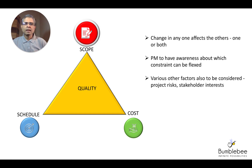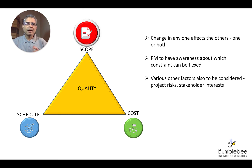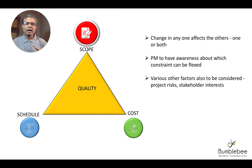Finally, there are various other factors which also need to be considered while managing the project, which include project risk, stakeholder interest, and others. But these three — scope, time, and cost — are the key elements which need to be kept in mind while managing the project and taking it to success. Thank you.